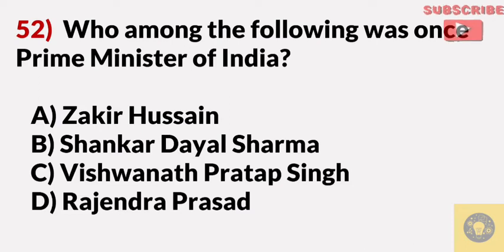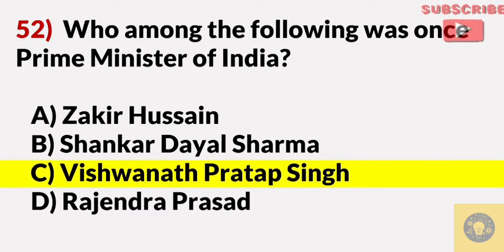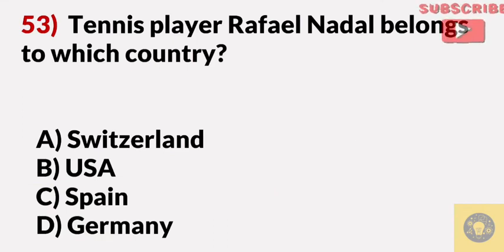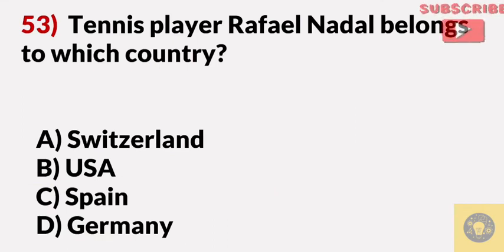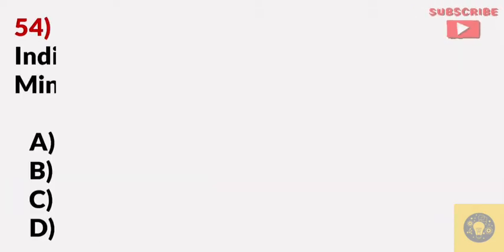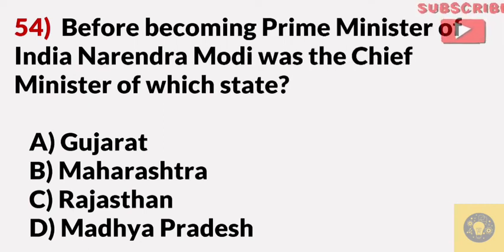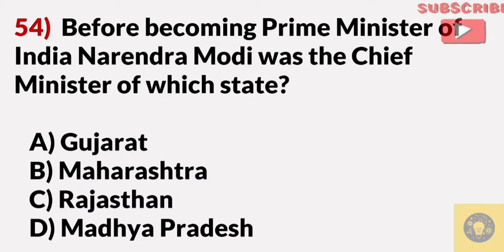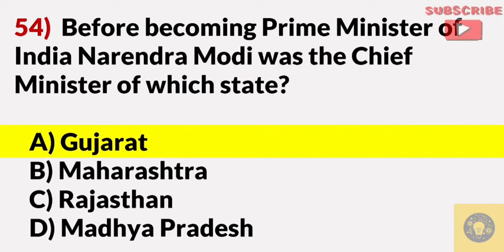Who among the following was once Prime Minister of India? Answer C, Biswanath Pratap Singh. Tennis player Rafael Nadal belongs to which country? Answer C, Spain. Before becoming Prime Minister of India, Narendra Modi was the Chief Minister of which state? Answer A, Gujarat.